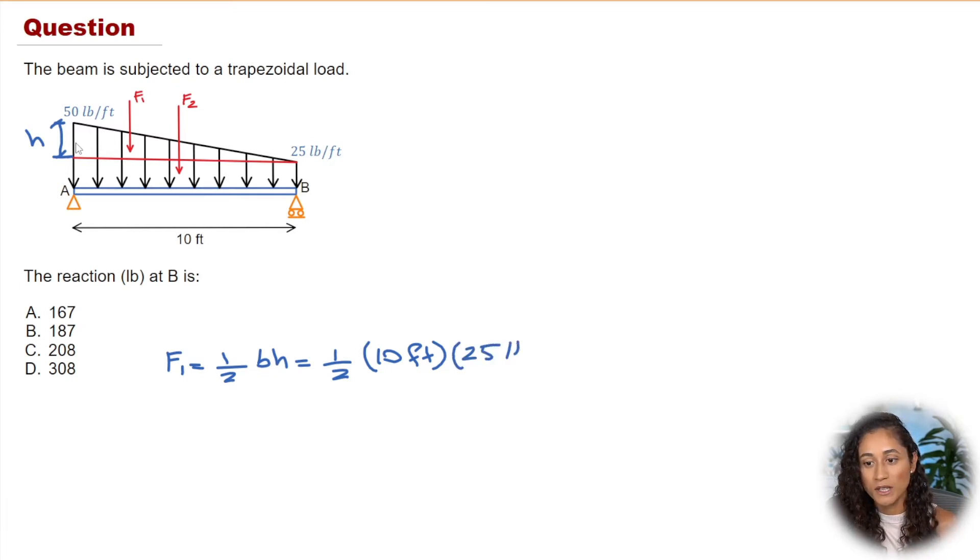So this is going to be in pounds per foot because it's a distributed load. Now let's check out the units. Note guys how the feet here cancels. We're gonna be left with pounds, which is the unit of force, and if you plug in these numbers in your calculator you're gonna get 125. Now let's find the force of the rectangle.